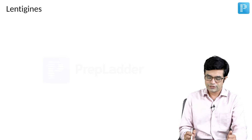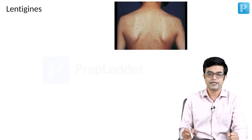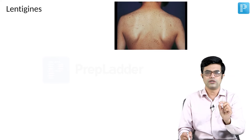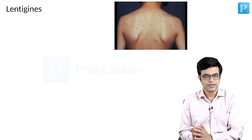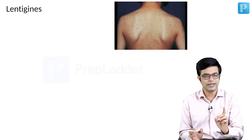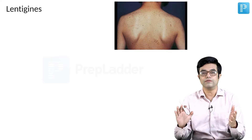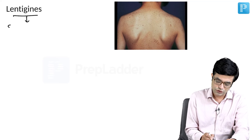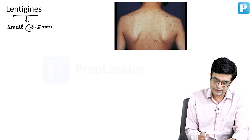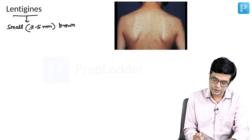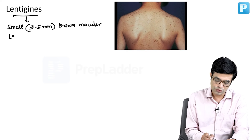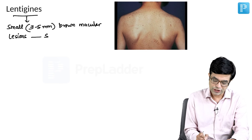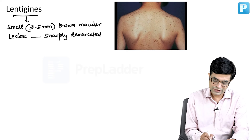What are the features about lentigines that you need to remember? Lentigines are much smaller compared to café-au-lait macules. They are slightly larger or the same size as ephelides, but unlike ephelides, they are present all over the body. Lentigines are small, around 3 to 5 mm in size — brown macular lesions, macules, non-palpable, which are sharply demarcated, that is well defined, and present anywhere on the body.